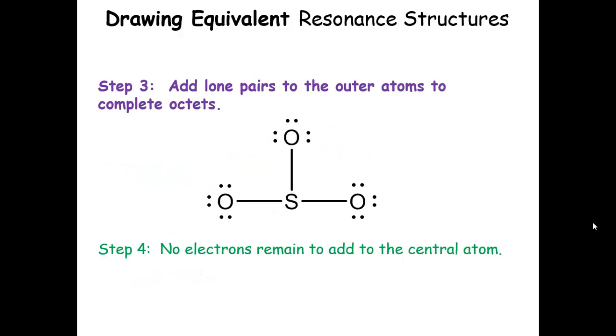Now let's add lone pairs to the outer atoms to complete the octets. We can move electrons if we need to, but let's add them to the outside atoms first. Now we've used all 24 electrons, distributed with no electrons remaining for the central atom.